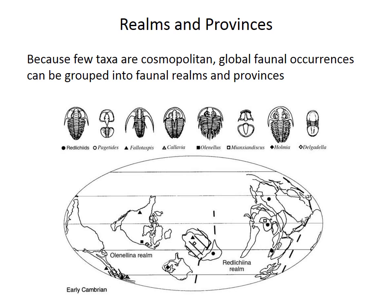Because of larval dispersal limitations and speciation related to vicariance and dispersal, different parts of the world contain different species. As a result, we can divide the globe into biogeographic realms and provinces, or faunal realms and provinces. In this Cambrian trilobite example, the paleogeographic map shows that North America and Europe were dominated by trilobites belonging to the suborder Olinelina, while other regions like Australia or China instead contain redlichiid trilobites — giving us the Olinelid realm and the Redlichiid realm.